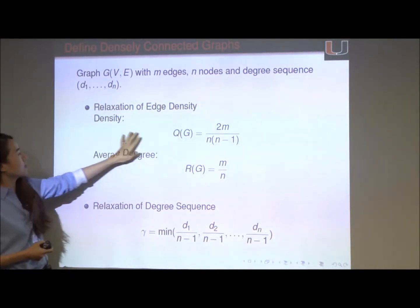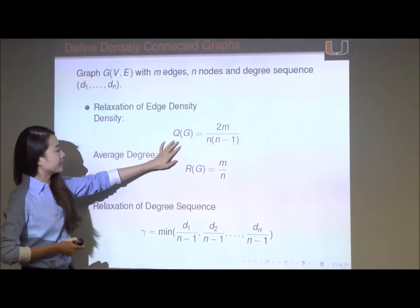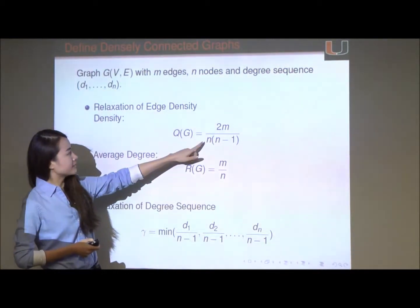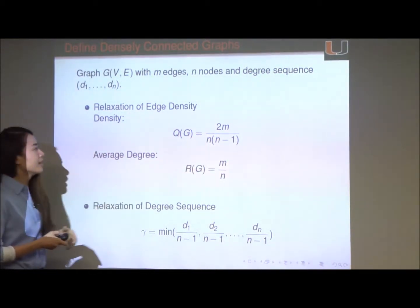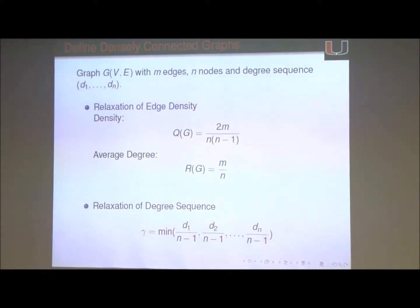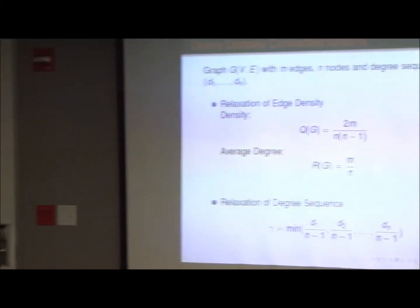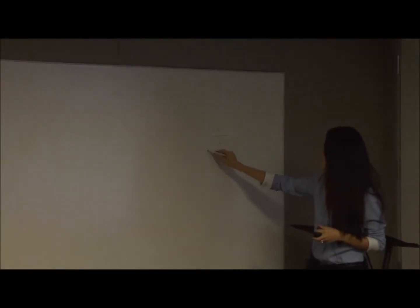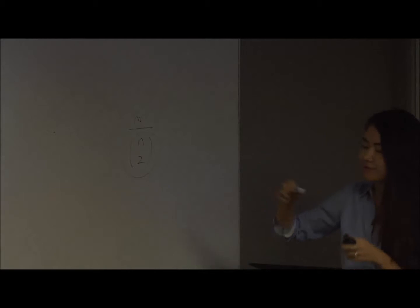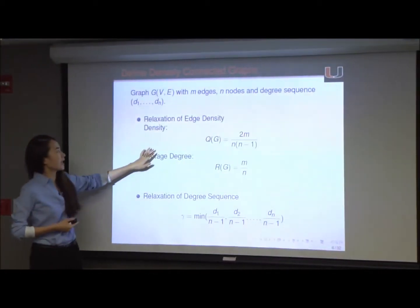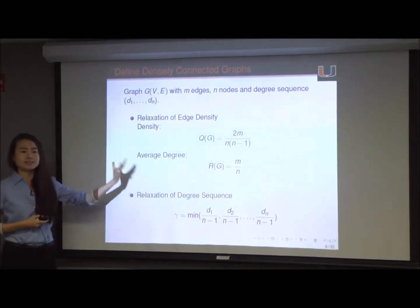For example, you can relax the definition of edge density. Edge density is defined as 2 times the total number of edges divided by n times n minus 1, where n is the total number of nodes. You can also see this as m divided by n-choose-2 — how many edges you observe over how many there could be — and this quantifies how dense the edges are in the graph. As you can see in the previous example, the edge density is 1. In general, the higher the edge density, the more densely connected the graph.